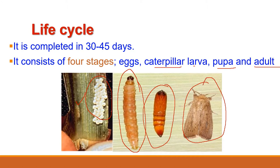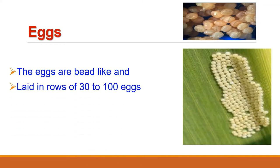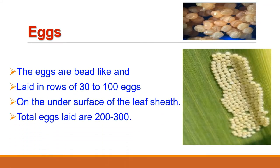The adult female moth lays about 300 eggs in 2 to 3 rows on the inner surface of the leaf sheath of the host plant. Each row consists of about 30 to 100 eggs. Eggs are bead-like, rounded with flattened poles, and are pink or violet on their upper surface and whitish on the undersurface. These eggs have an incubation period of 5 to 8 days.